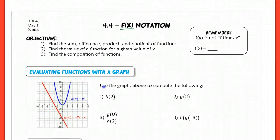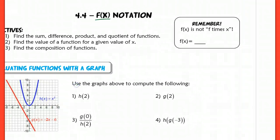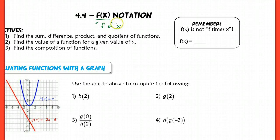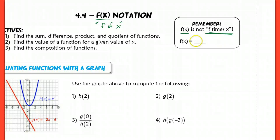One thing I want to make sure you understand is that f of x — written out or said out loud as f of x — is not f times x. This is probably the biggest mistake that people make at first. I know it looks like you're multiplying the two, but that is not what it means. It means f of x, where f of x is equal to y.